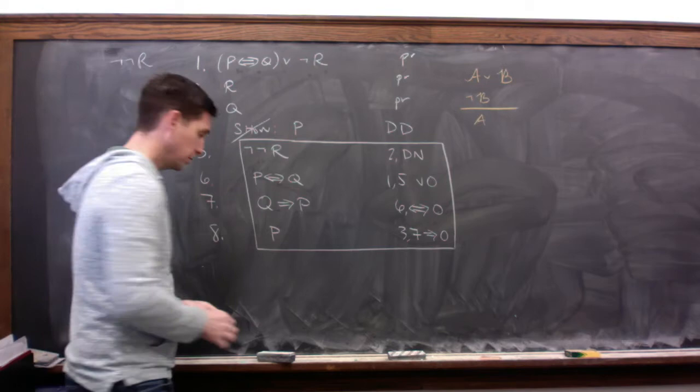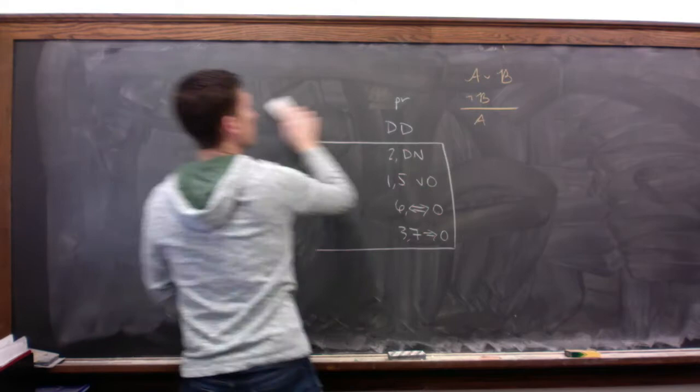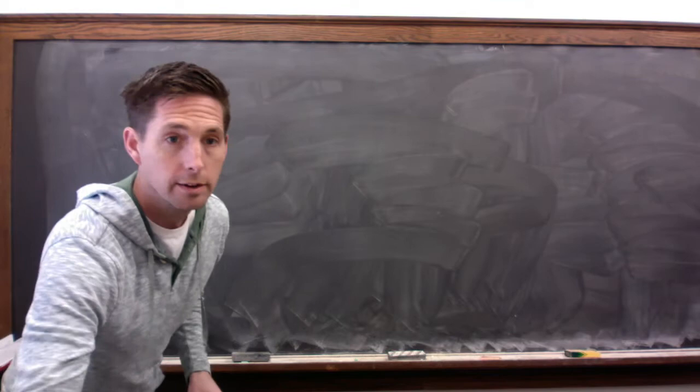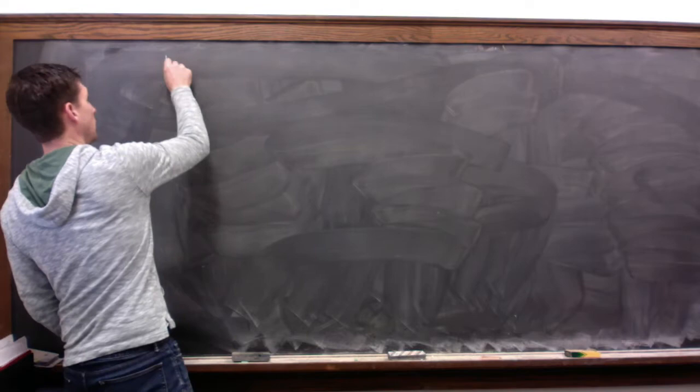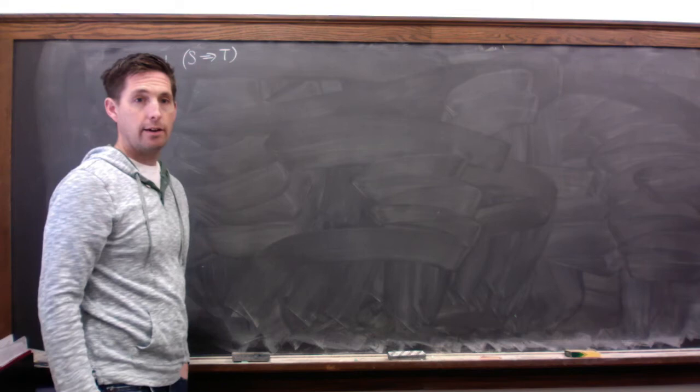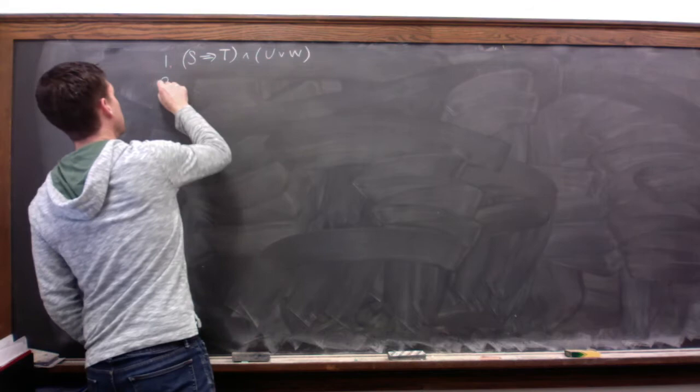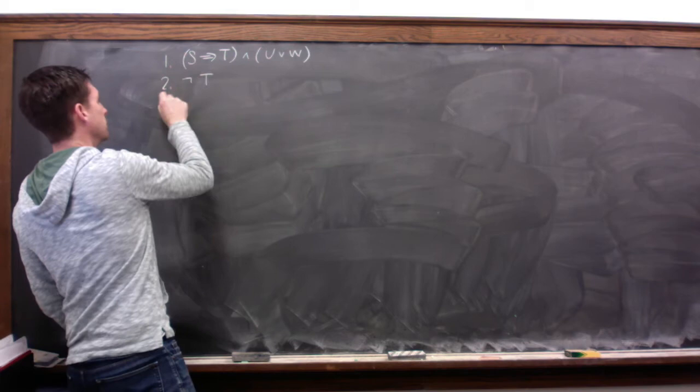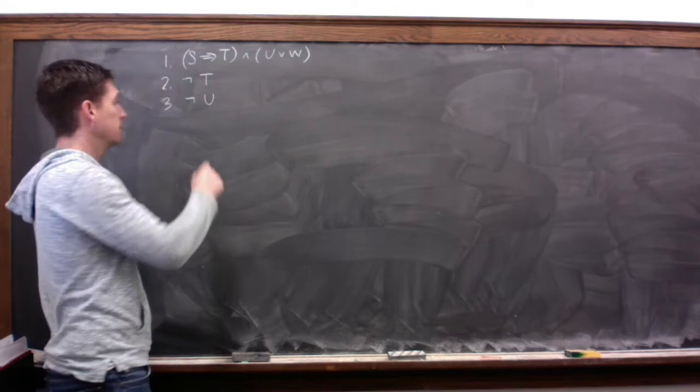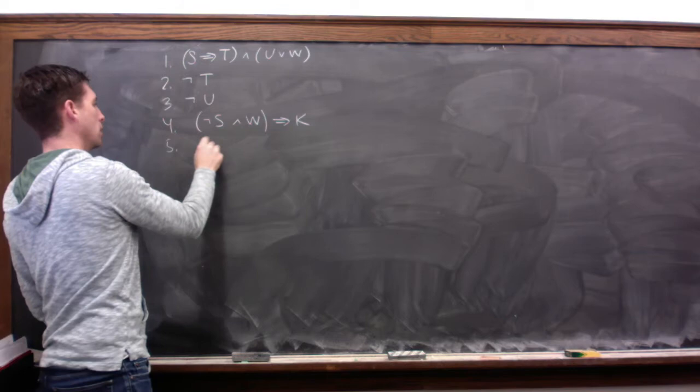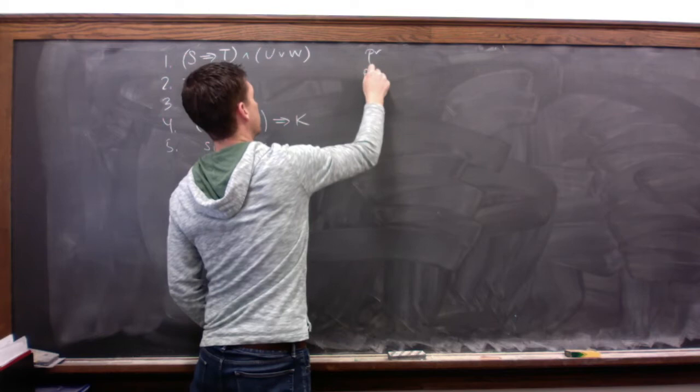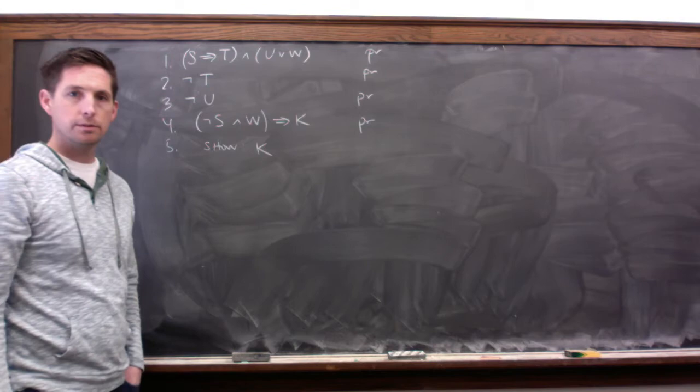Okay, let's move on to a different example. This one's going to be a little bit longer, and allow us to see some other rules that we haven't seen yet. So the first premise for this is S arrow T and U or W. The next premise is not T. Third premise is not U. Fourth premise is if not S and W, then K. Okay, and we're going to try to show K. So we note that these are our premises, and now we can get started with trying to finish this derivation.